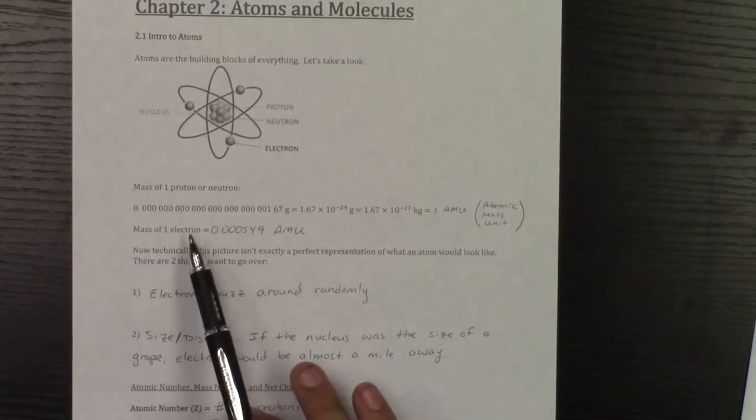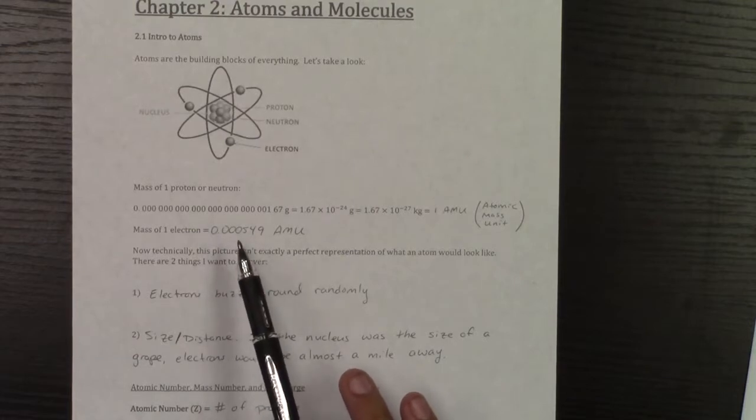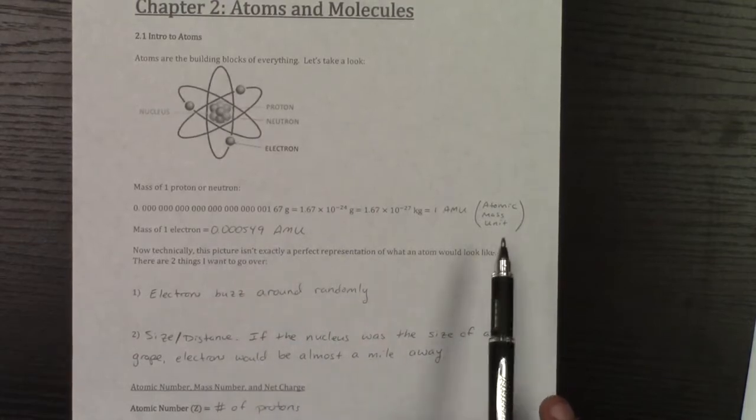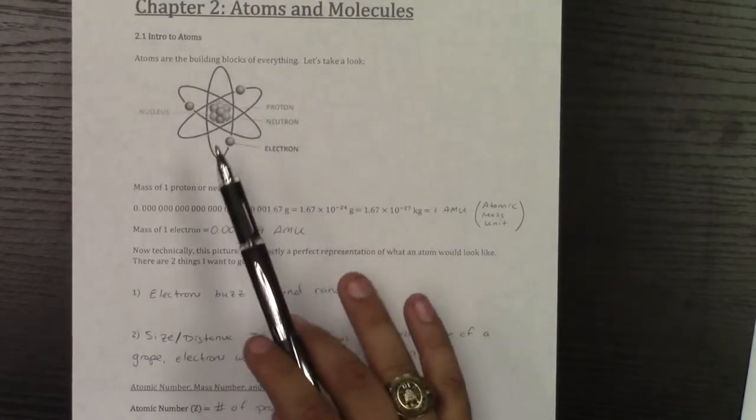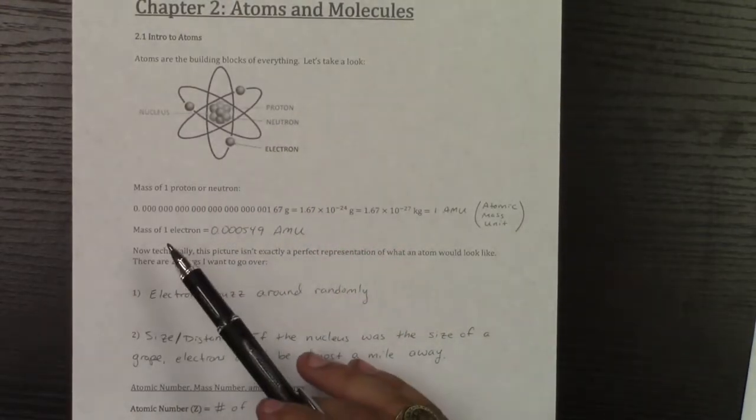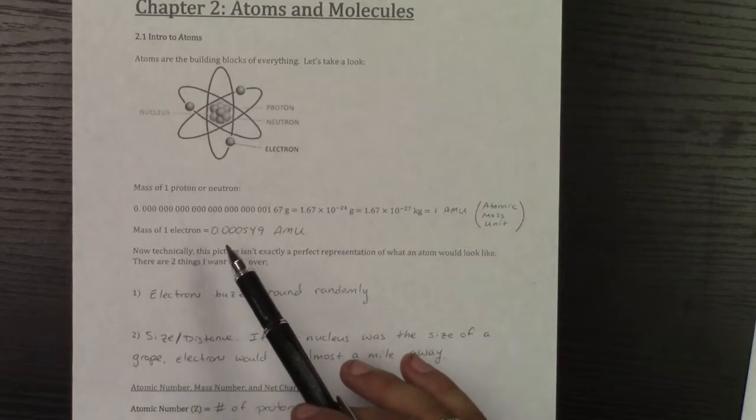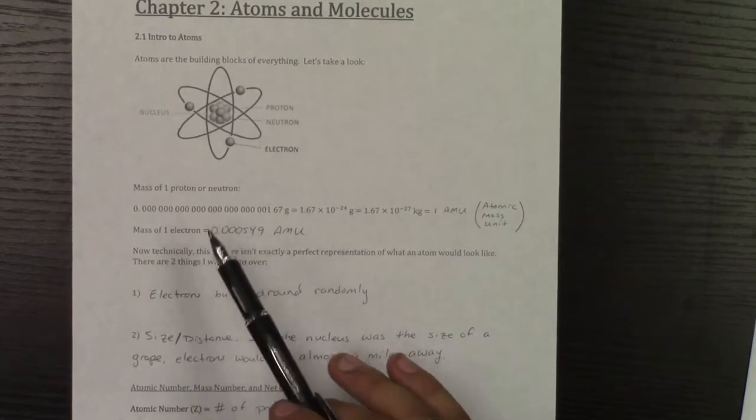The mass of one electron is 0.000549 atomic mass units, which is why whenever we calculate the mass of an atom, we're pretty much ignoring the mass of an electron because it's so small relative to the proton.